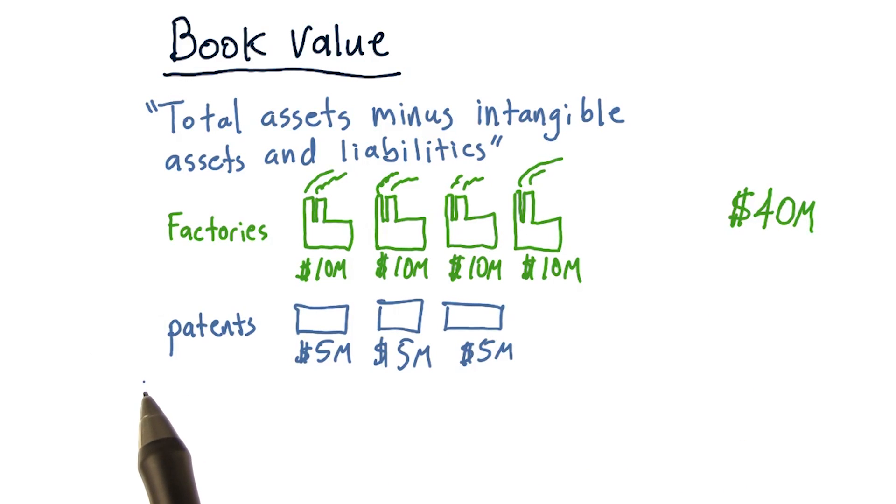Suppose this company also holds three very important patents, and each patent is valued at about $5 million. The value of these patents is about $15 million, but these are intangible assets that are hard to price exactly.